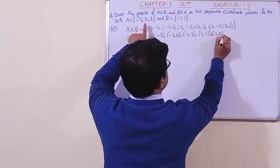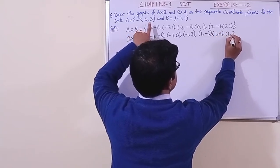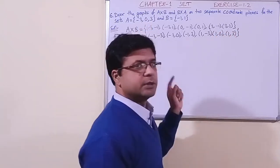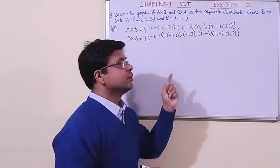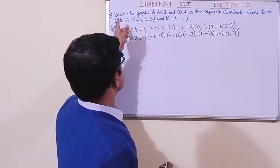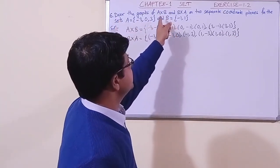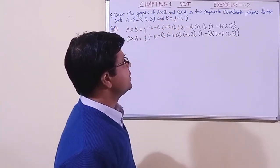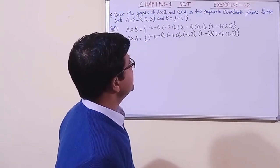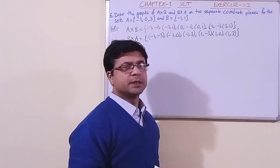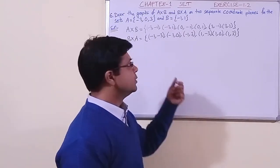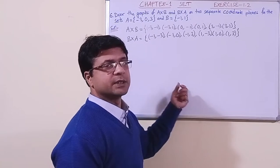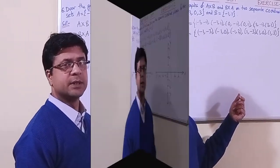Then what is left: 1 with minus 3, 1 with 0, then 1 with 3. Now we draw the graph of A cross B and B cross A on separate coordinate planes, drawing the x-axis and y-axis first.